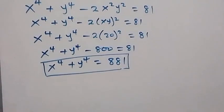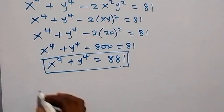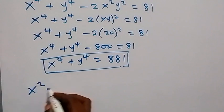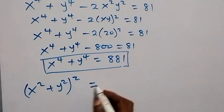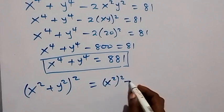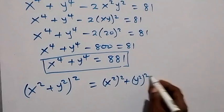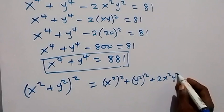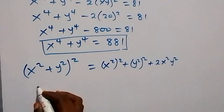So let's keep that result. In the next step we want to find x squared plus y squared. From the identity, we have x squared plus y squared, all squared. Let's expand this: it gives us x squared squared plus y squared squared, plus 2 times x squared times y squared.